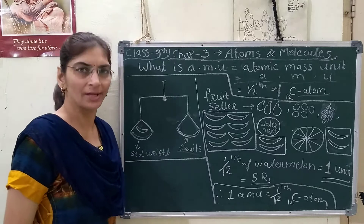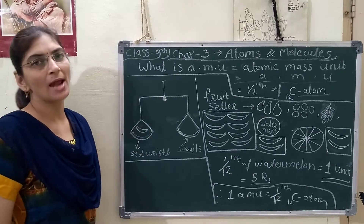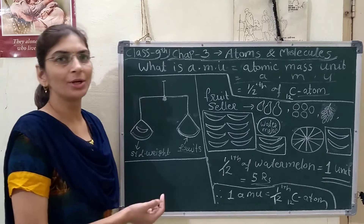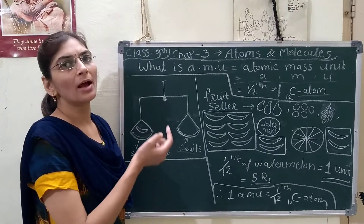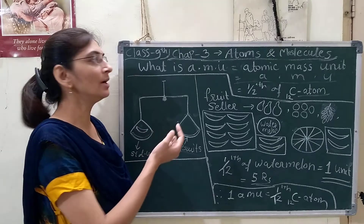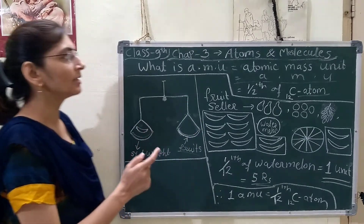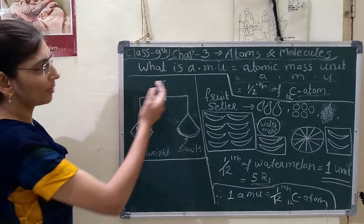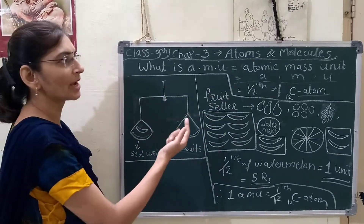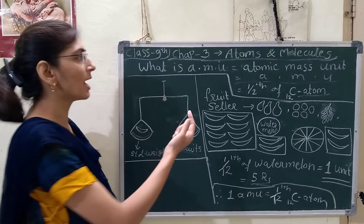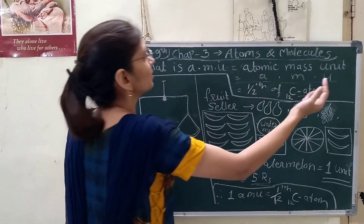In our last lecture, we discussed atomic mass and its unit of measurement. Everything needs a unit for measurement, and for atomic mass, scientists derived the unit AMU — that is, atomic mass unit.